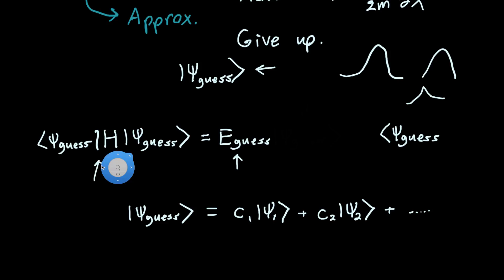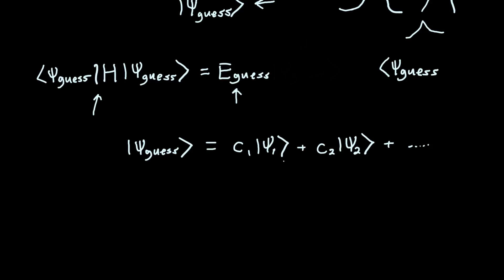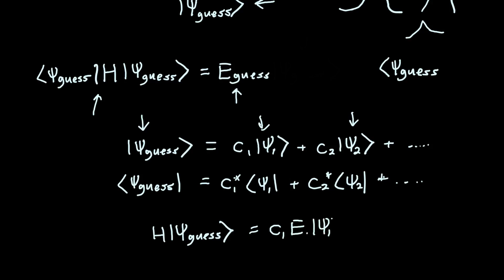And if we want to find the energy, we expand the bra wave function as c1*⟨ψ1| + c2*⟨ψ2| plus all the higher terms. Now, if you hit the Hamiltonian, if you attack this guess wave function, we're going to hit each one of our true wave functions, and that's going to produce the energy. So H|ψ_guess⟩ is just c1E1|ψ1⟩ + c2E2|ψ2⟩, and so on, all the way up to infinity.